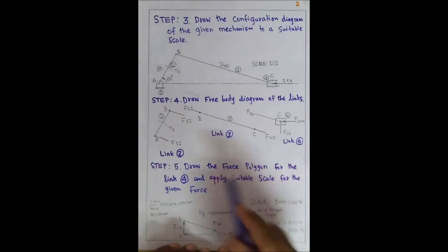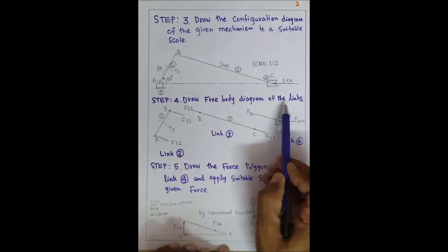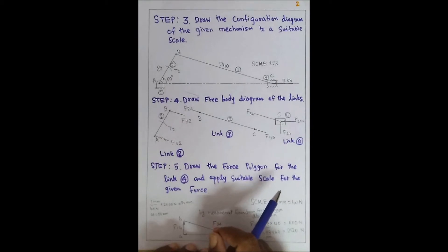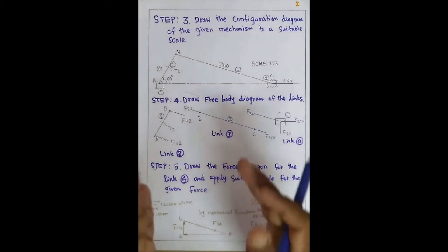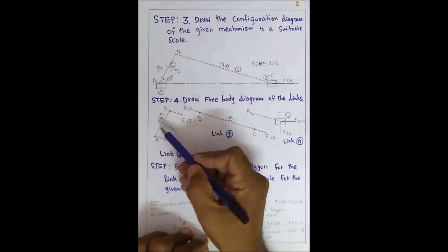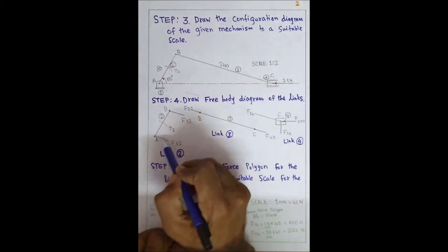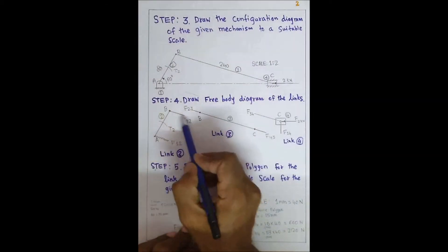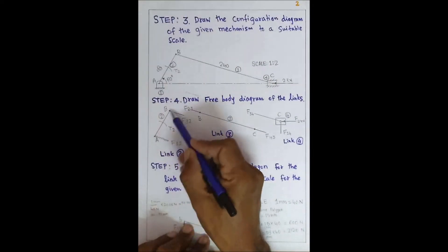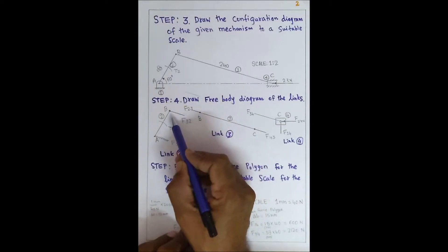Step 4 — draw the free body diagram of each link. A free body diagram is an isolated diagram. You draw each link isolated from the original diagram and mark what forces are acting on that link only. There is no need for actual dimensions, but the line of action is important.